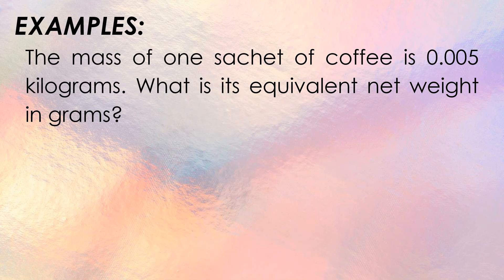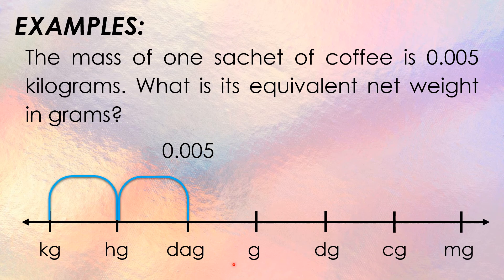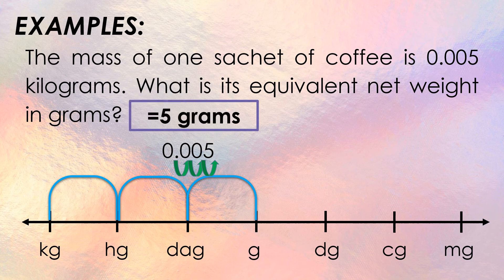Now let us apply the metric and English systems in word problems. First word problem: The mass of one sachet of coffee is 0.005 kilograms. What is its equivalent net weight in grams? Using the metric system, move the decimal point from kilograms to grams — three places to the right: one, two, three. Therefore, 0.005 kilograms is equal to 5 grams.